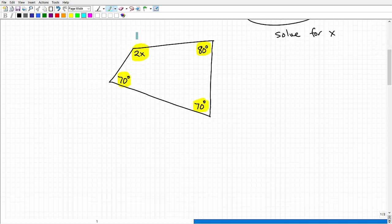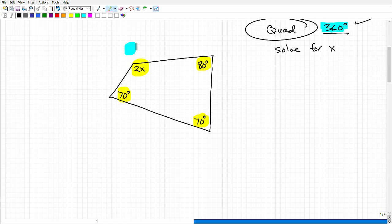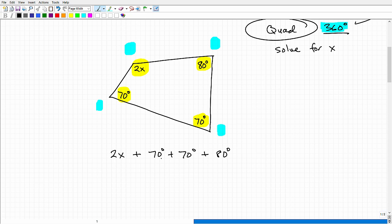So if the sum of the angles of a quadrilateral is 360 degrees, that means when I add this angle plus this angle plus this angle and this angle, I'm going to get 360. So let's do that now. It's going to be 2x plus 70 degrees plus 70 degrees plus 80 degrees. Those are my four angles. And that's going to be equal to 360 degrees.